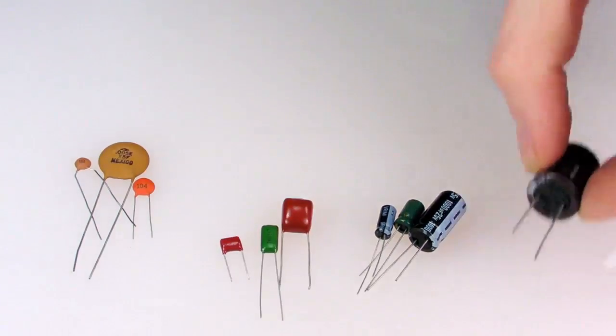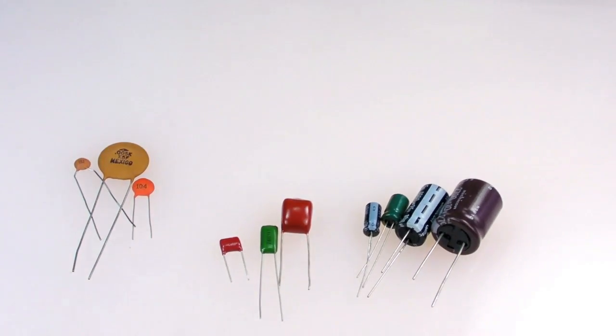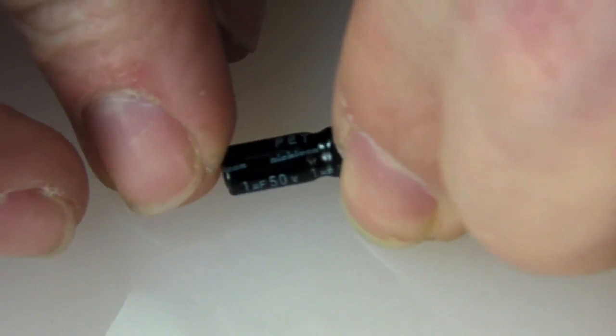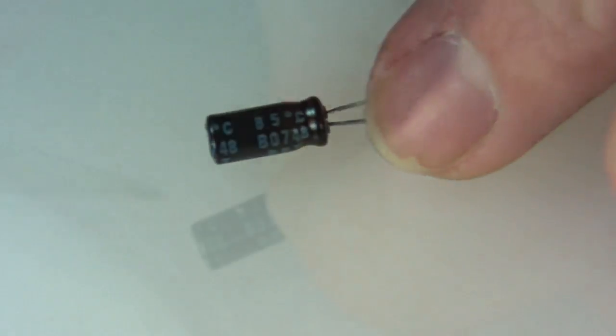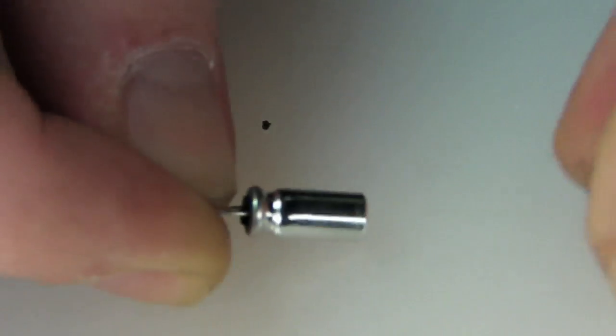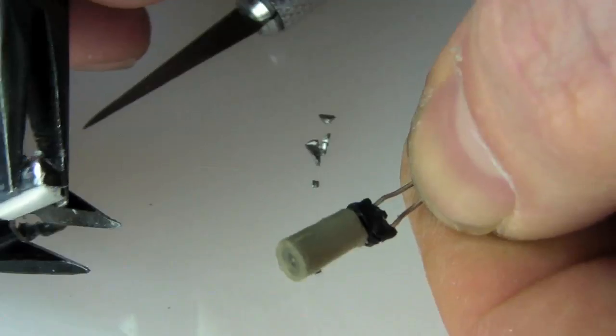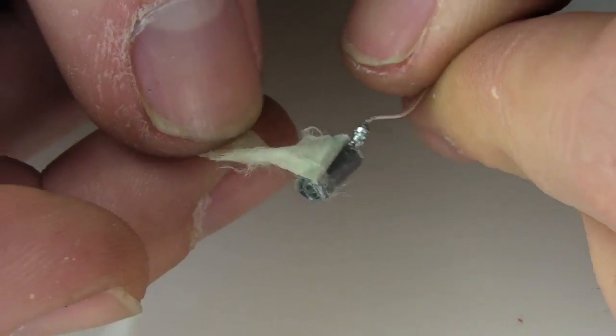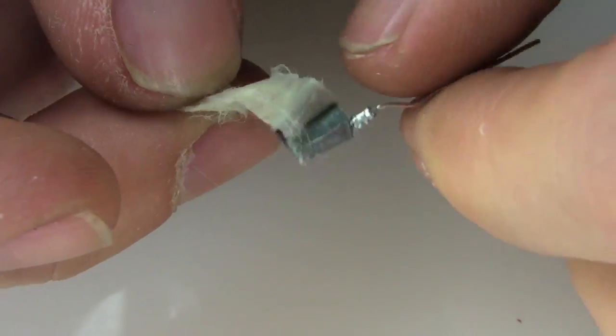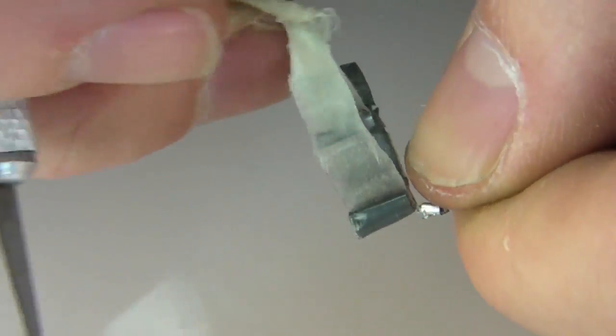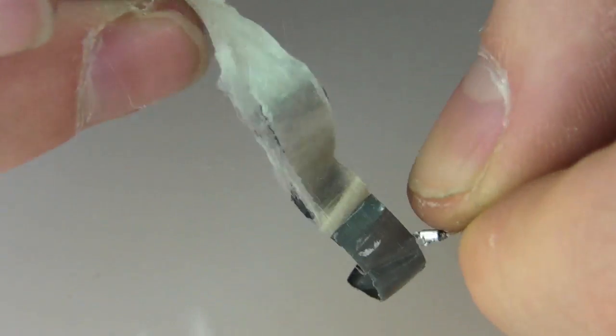I decided to have a look inside a small electrolytic cap to see what makes it tick. Outside of the plastic coating lies a pretty thick metal shell. Inside that shell I found a tightly packed roll. That roll is made up of long strips of paper and two thin metal conductors. And that's all. It's a pretty simple design.